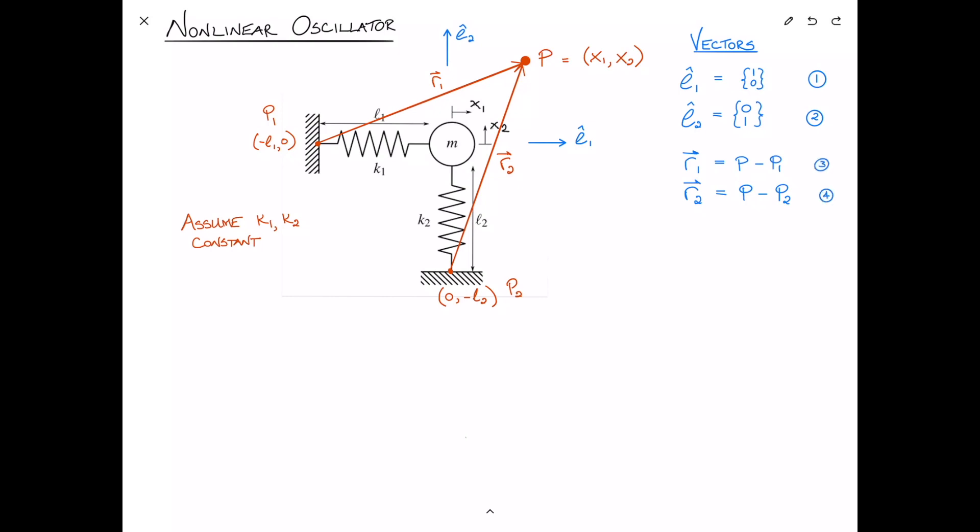Let's call these 3 and 4. Then to find the unit vector that points in the direction of r1 and r2 respectively, we just take each of the vectors and divide it by its magnitude. So e hat r1, which is the unit vector in the r1 direction, is simply the vector r divided by its magnitude, and similarly er2 is the vector r2 divided by its magnitude. We'll call these equations 5 and 6.